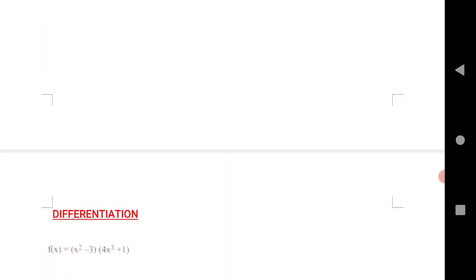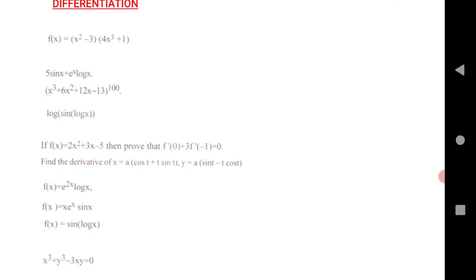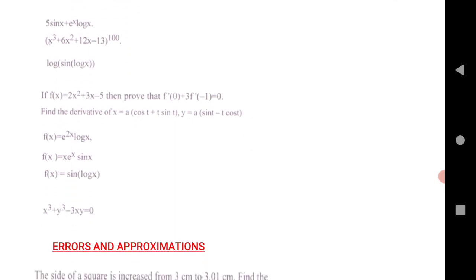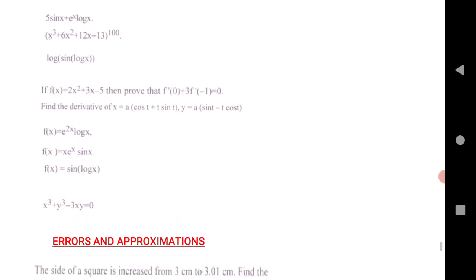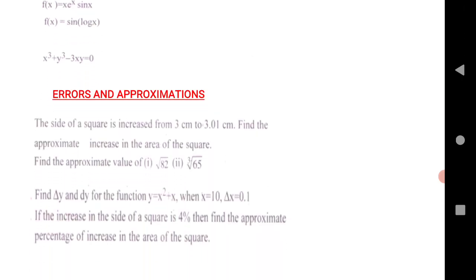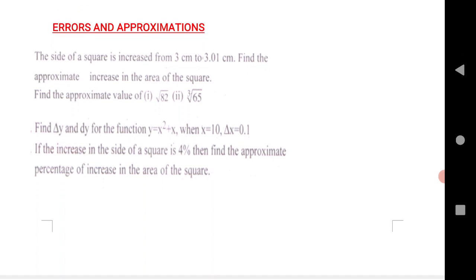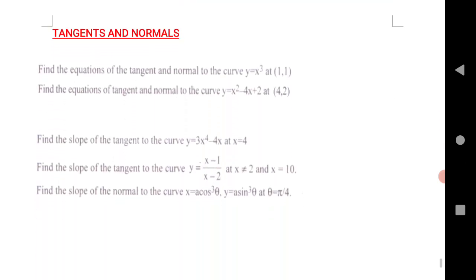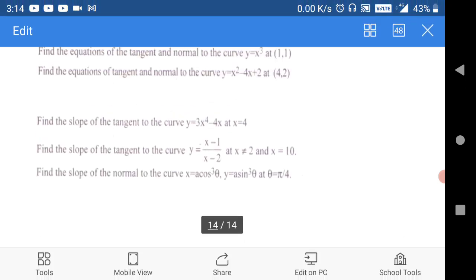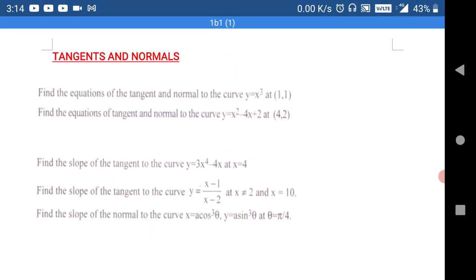After getting that papers, you will see that one. Next is differentiation. I have given one, two, three, four, five, six, seven, eight, nine, ten questions, very important. Errors and approximation, next chapter, one, two, three, four questions I have given. Next is last chapter, that is tangent and normal, very important chapter. Tangent normal, one, two, three, four, five questions.